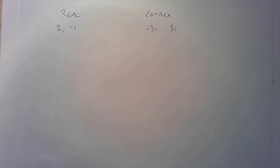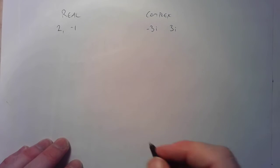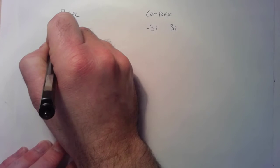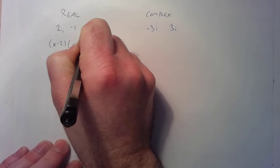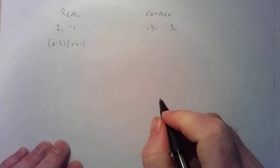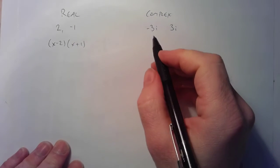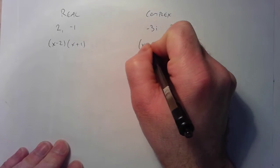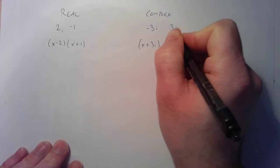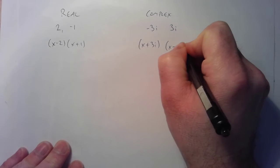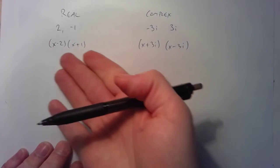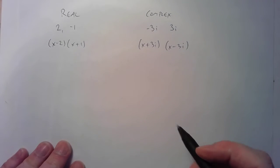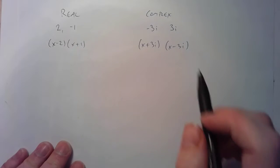So those could be four different zeros, and if I turn them into factors: 2 becomes x minus 2, negative 1 becomes x plus 1, negative 3i becomes x plus 3i, and 3i becomes x minus 3i. So these would be the four factors of a fourth degree polynomial that has those four zeros.